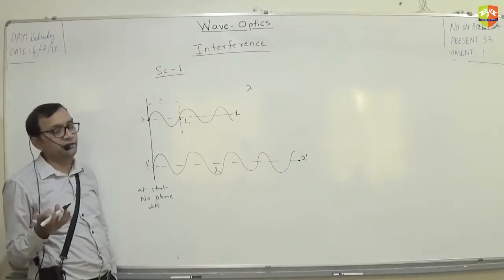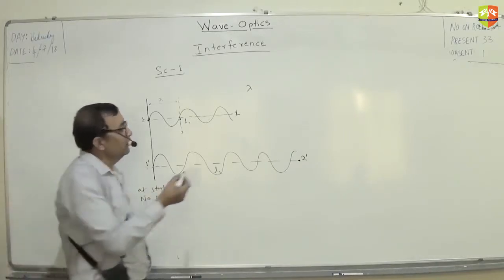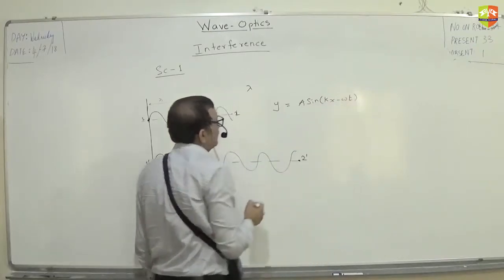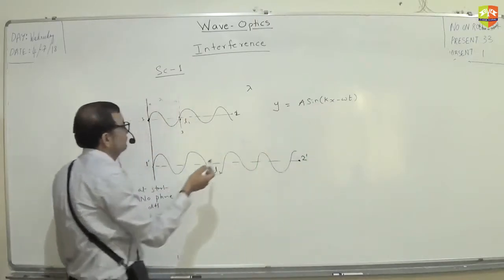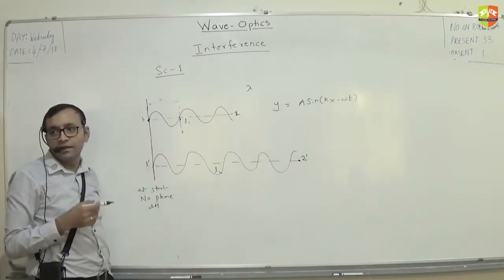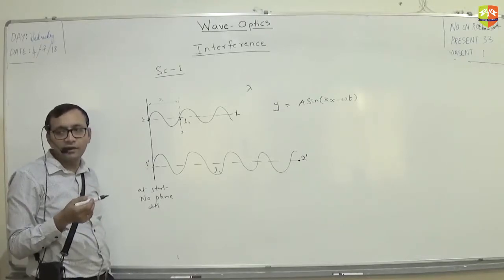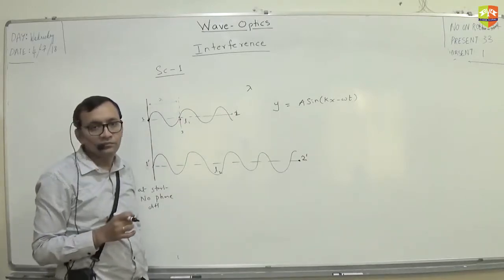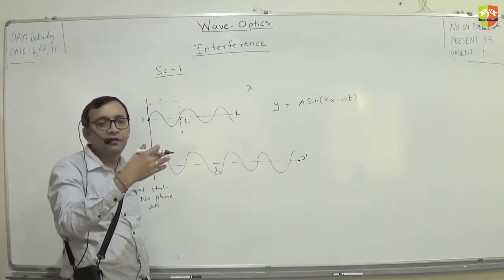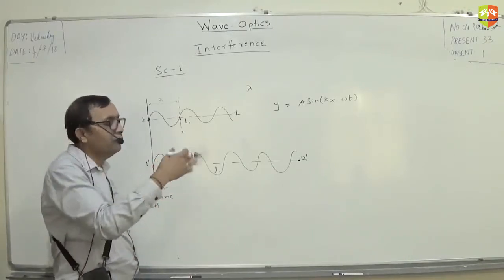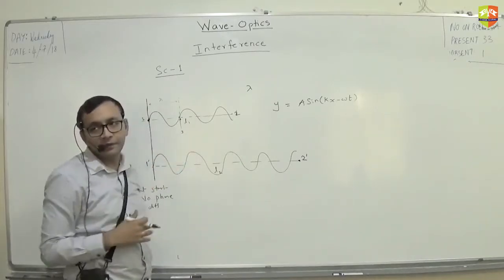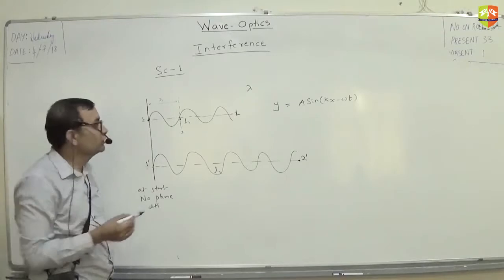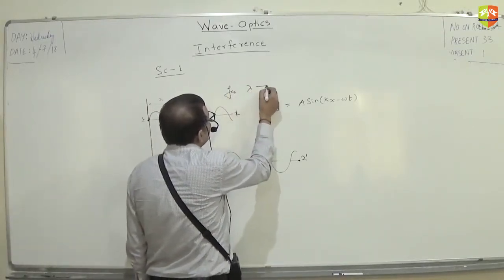Consider the wave y = A·sin(kx − ωt). At what distance x do things repeat? At x + lambda. The sin function repeats after every phase of 2π. So every lambda it repeats, and every 2π it repeats. With respect to distance, every lambda corresponds to a phase of 2π. So the phase of point 3 will be ahead of point 1 by 2π. For every lambda, phase difference of 2π.